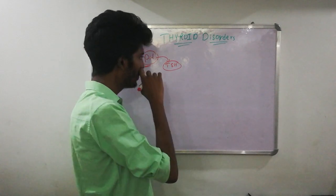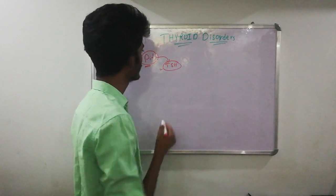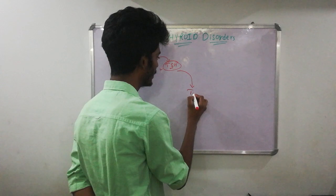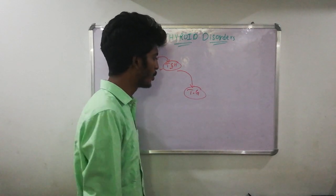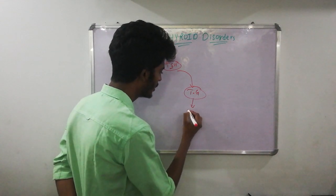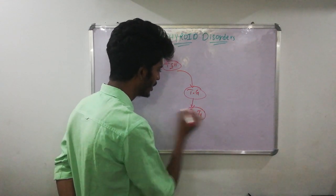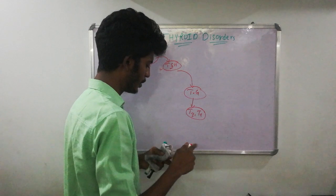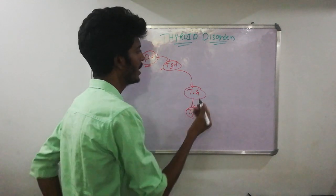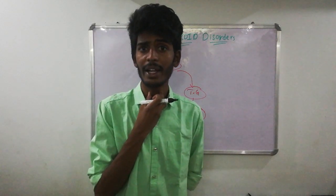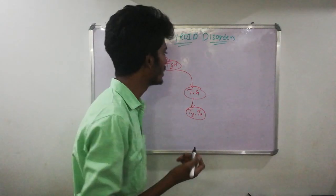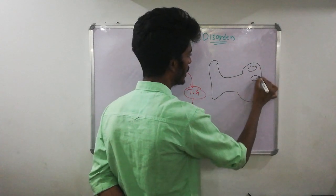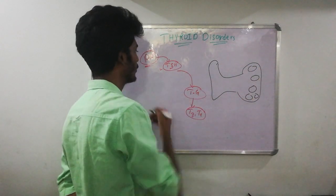Thyroid stimulating hormone is produced by the anterior pituitary. This TSH will go and act on the thyroid gland, which in turn produces our thyroid hormones — T3 and T4. The thyroid gland has a receptor for TSH. Our thyroid gland is located in the anterior part of the neck; it is a butterfly-shaped gland made out of follicles called thyroid follicles.